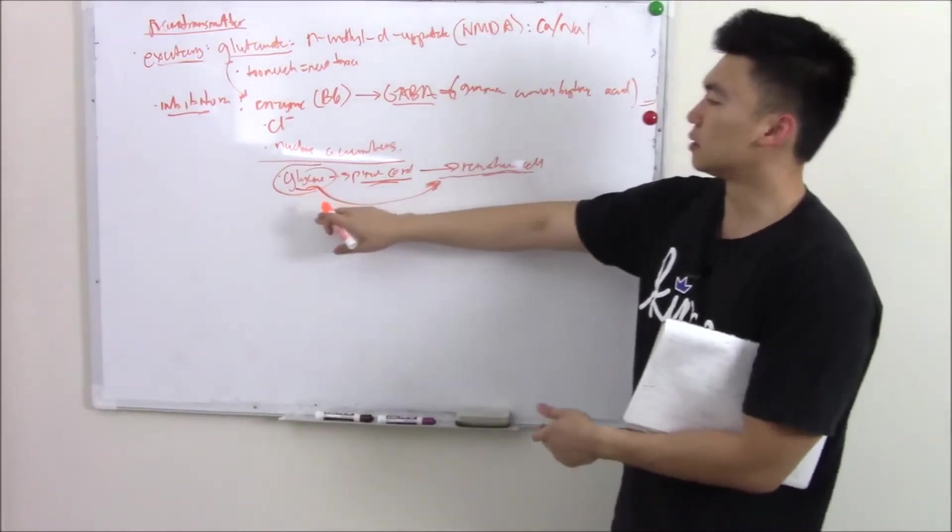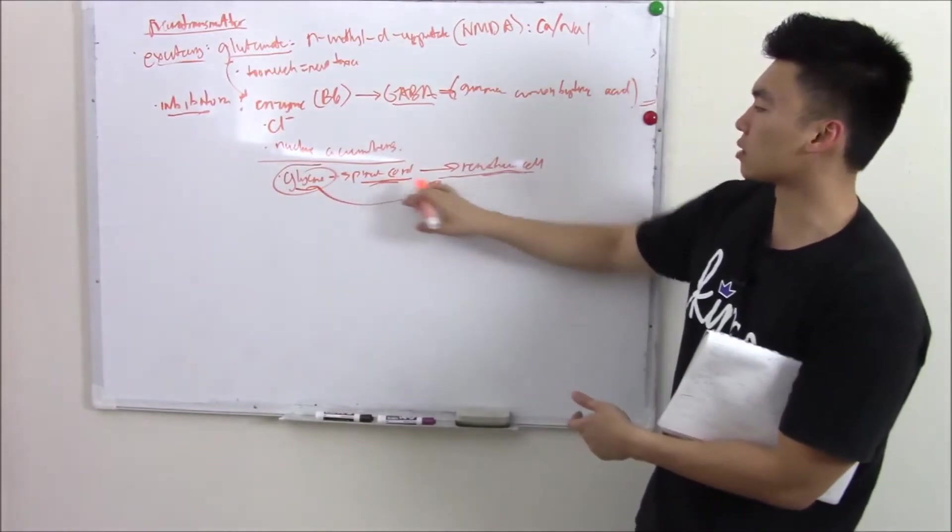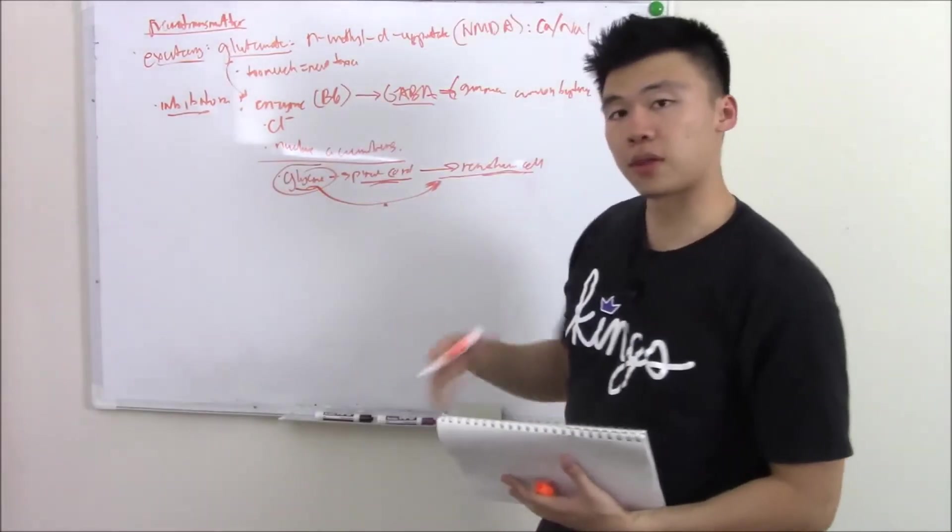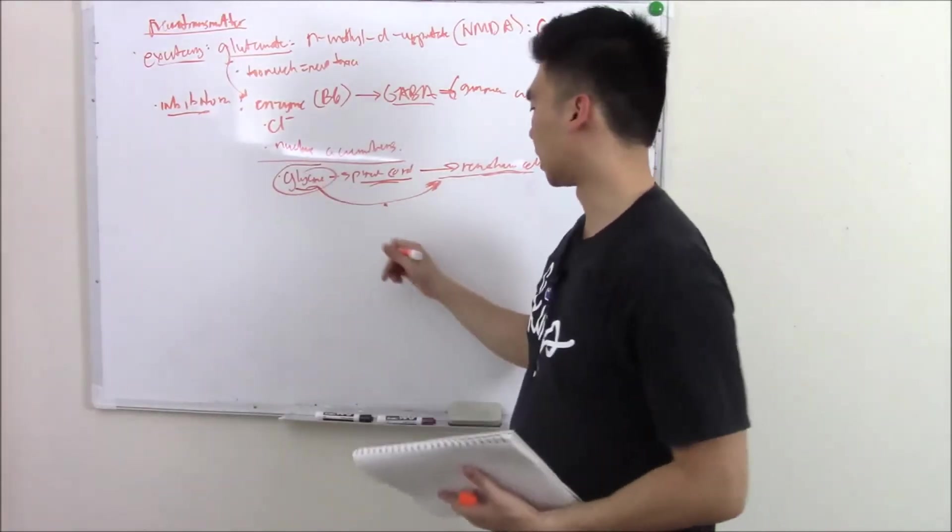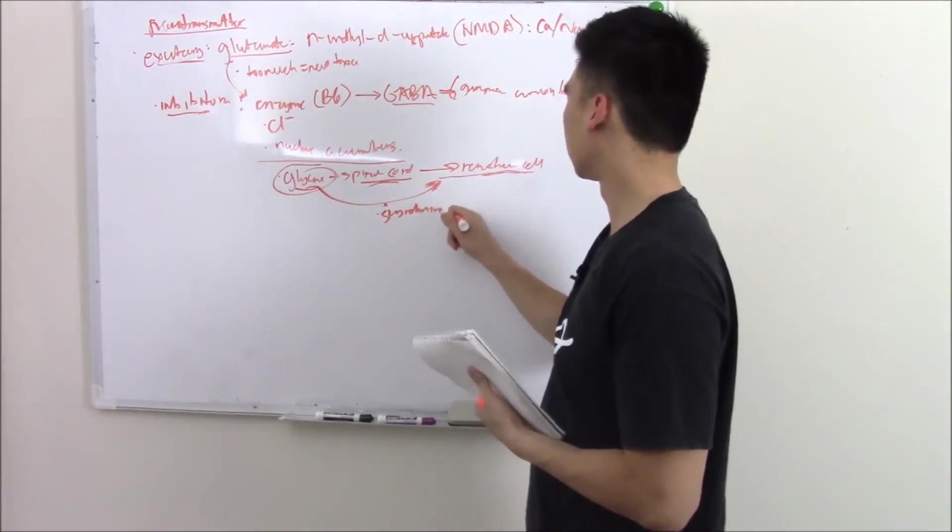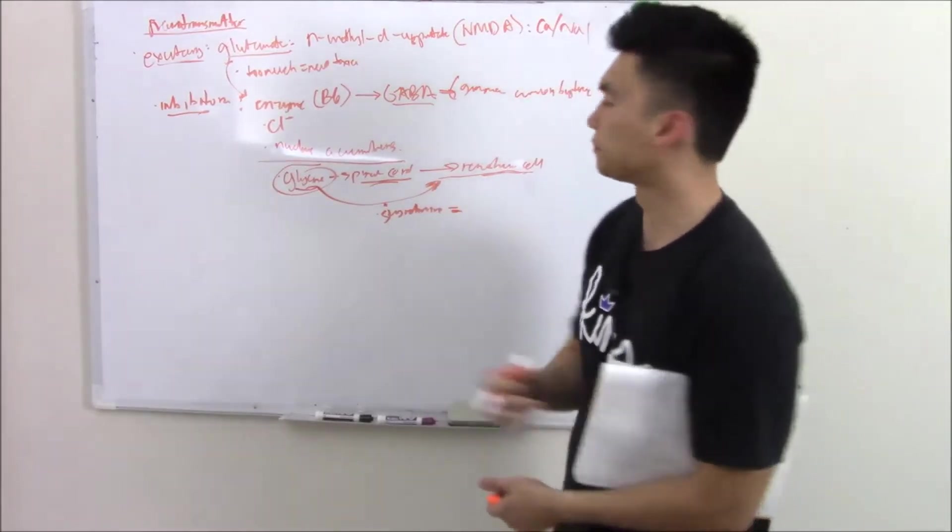So glycine is your main inhibitor in your spinal cord and it works on your Renshaw cells. Some pathology: there are some chemicals that can block glycine like strychnine, and that causes death as you can imagine.